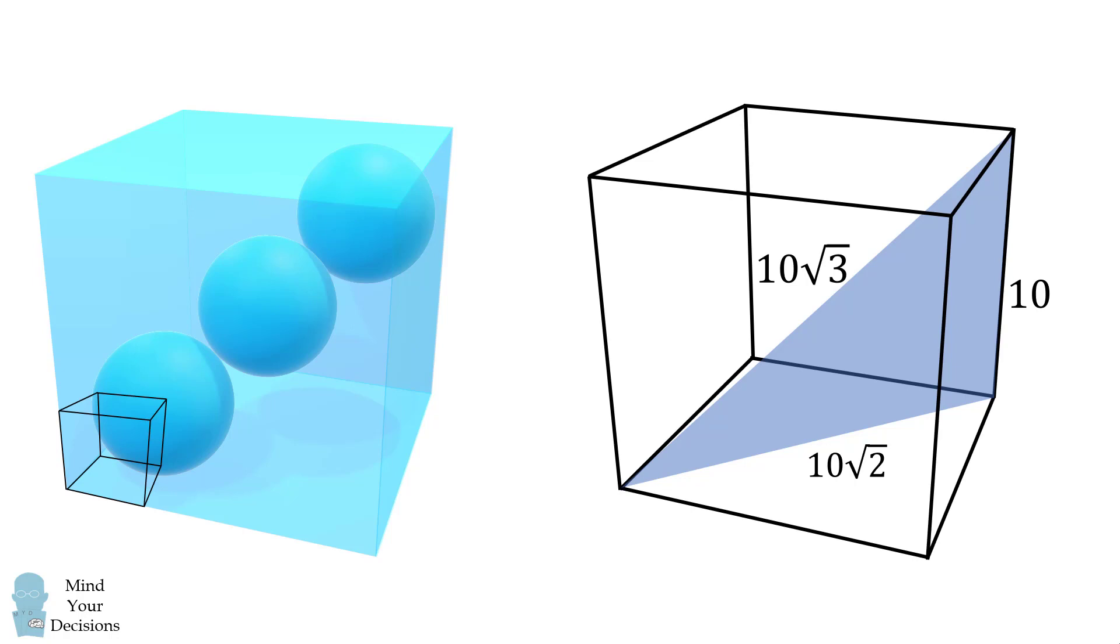we have a cube that forms between the center of that sphere and the corner of the cube. This cube will have a length equal to the radius of the sphere, which means its long diagonal will be equal to r times the square root of 3.